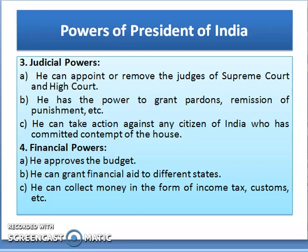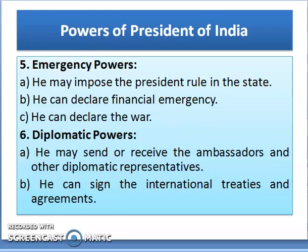The fourth power is Financial Power. The President approves the budget, can grant financial aid to different states, and can collect money in the form of income tax, customs, etc. Regarding Emergency Powers, he may impose President's Rule in a state, declare a financial emergency, and declare war. Under Diplomatic Power, the President may send or receive Ambassadors and other diplomatic representatives, and can sign international treaties and agreements.